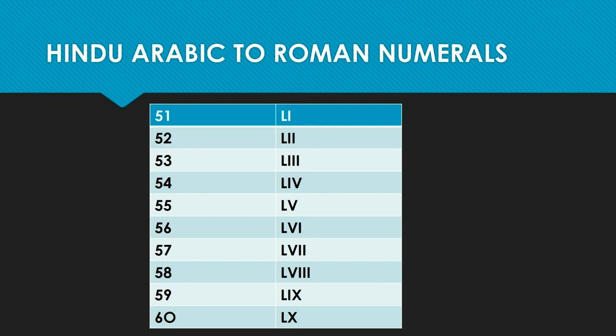Fifty-one is 50 plus 1, so 50 is L and 1 is I, giving us LI. Similarly you have all the numbers up to 59. Here you can see all the Roman numbers from 61 to 70. For 61 you do 60 plus 1 — 60 is LX and 1 is I, so LXI. Seventy will be 50 plus 20, so LXX.